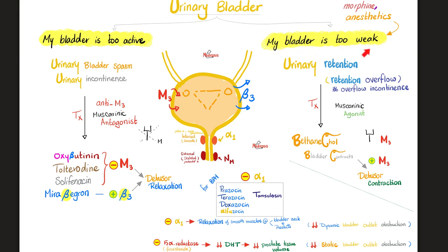Conversely, if the bladder is too weak — maybe because of morphine, anesthetics, or old age — you want to boost bladder contractility. First, make sure there is no stone or anatomical obstruction, because if you give a medication to boost the detrusor when there is an obstruction, you can rupture the bladder. So first rule out stones, obstruction, cervical cancer, benign prostatic hyperplasia, and prostate cancer.